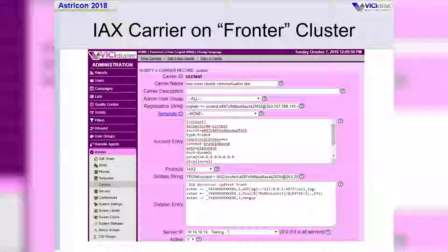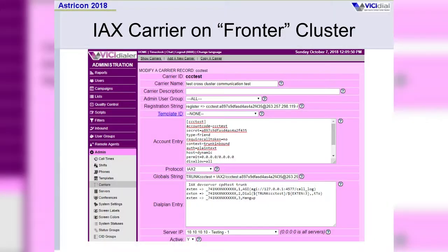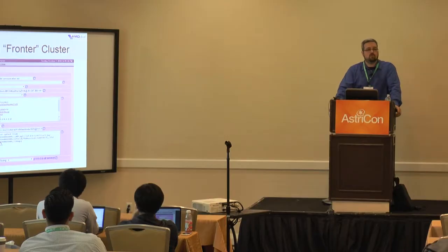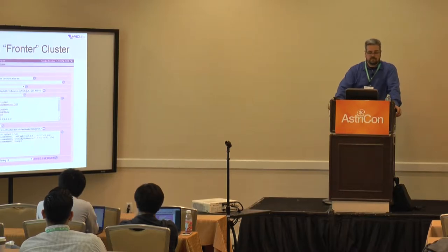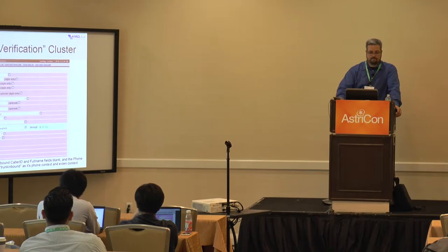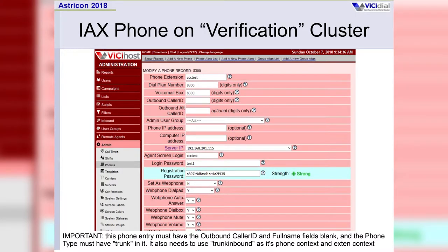It's pretty simple and standard. You've got the registration string so that the two servers will register to each other. You've got the account entry, the global string so that you can use it in the custom dial plan entry. In this case we're using 74 as the dial prefix. That's important because you have to use 74 in your campaign settings as a three-way dial prefix so that you can do the transfers. We're going to jump to the verification cluster — you'll notice the fronter cluster is purple and the verification cluster is red so you can better keep track of them.